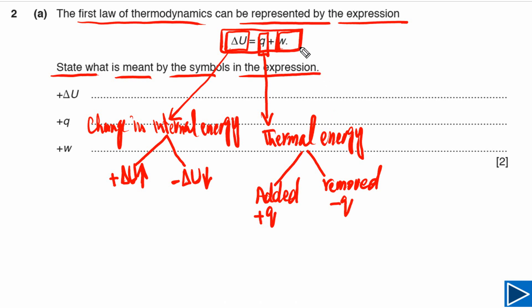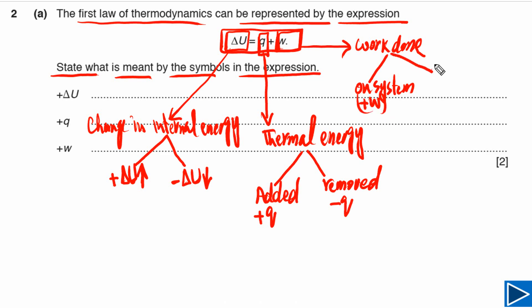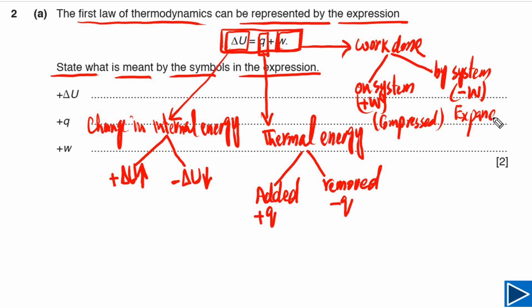W represents work done. Work done is positive if work is done on the system, so we use a plus sign in front of W. If work is done by the system, we use a negative sign in front of W. We can also understand this as: if a gas is compressed then work done is positive, and if the gas expands, work done on the system is negative.